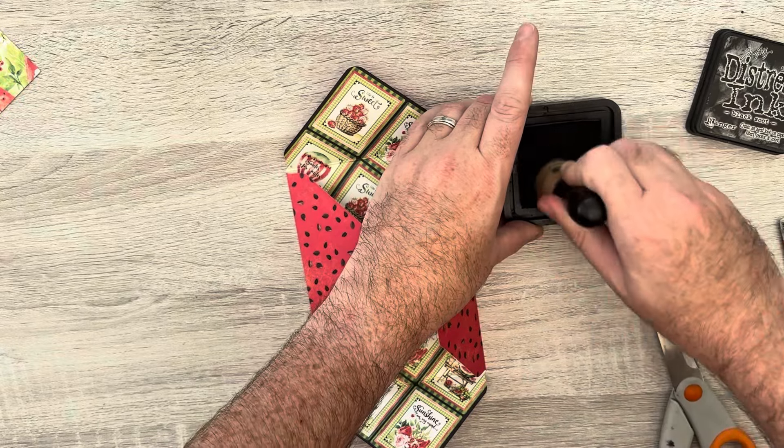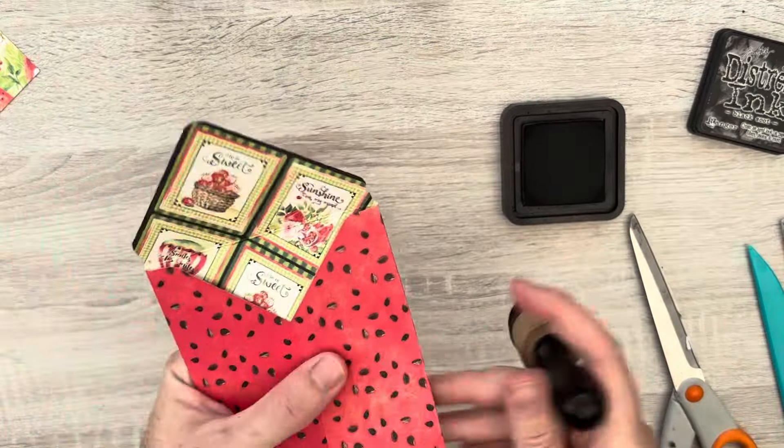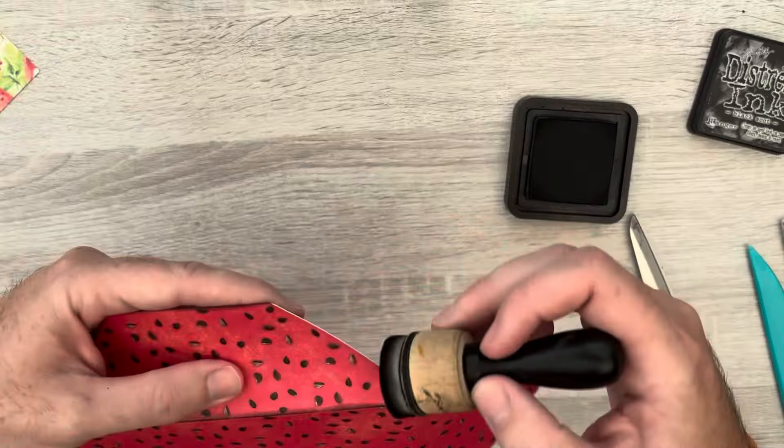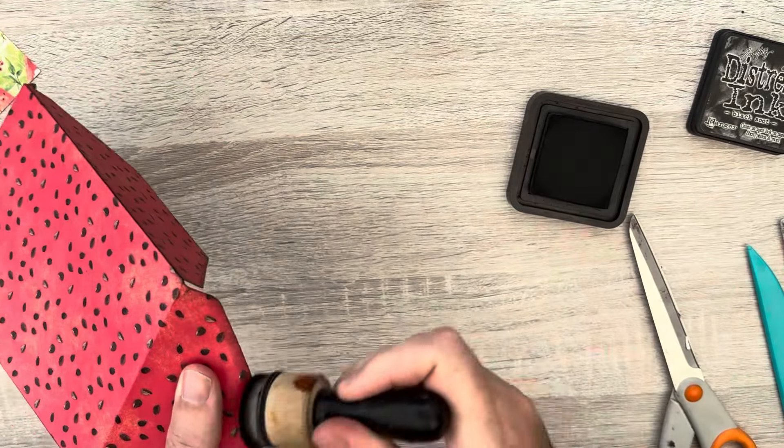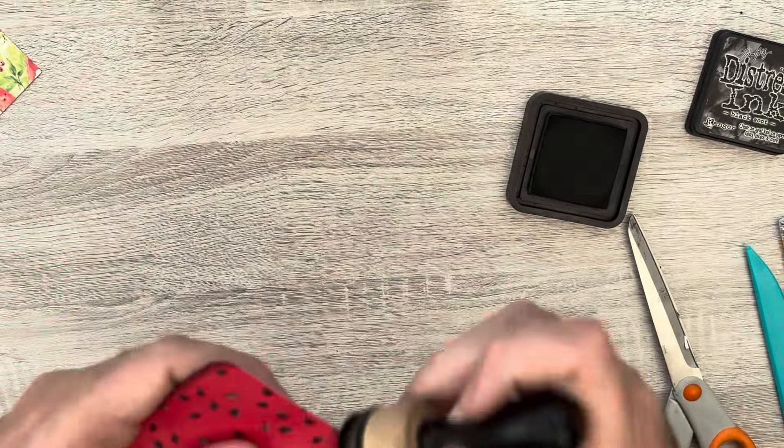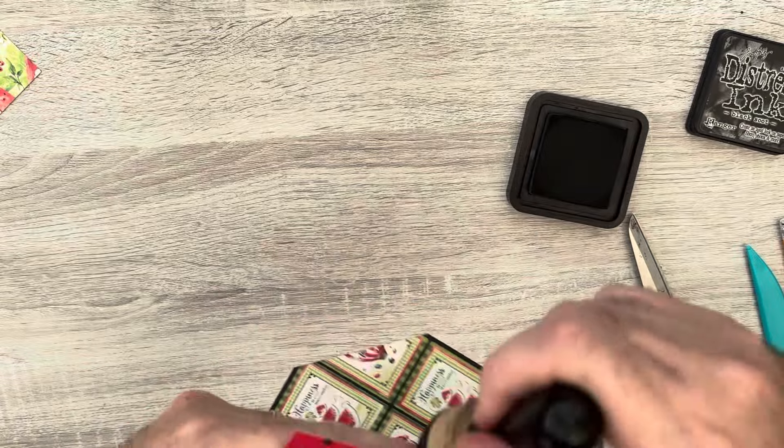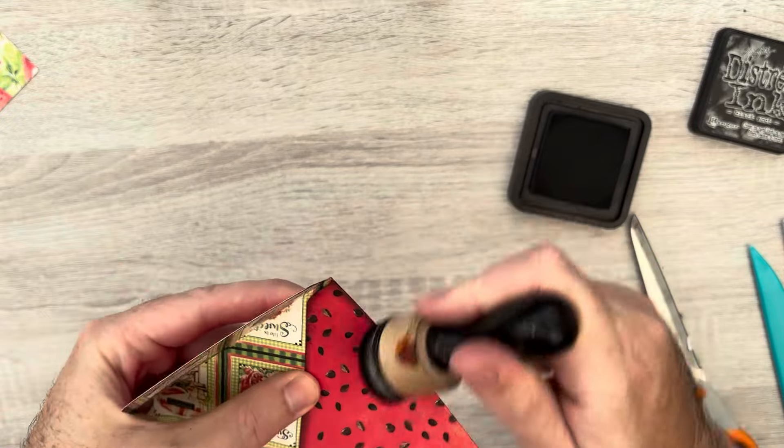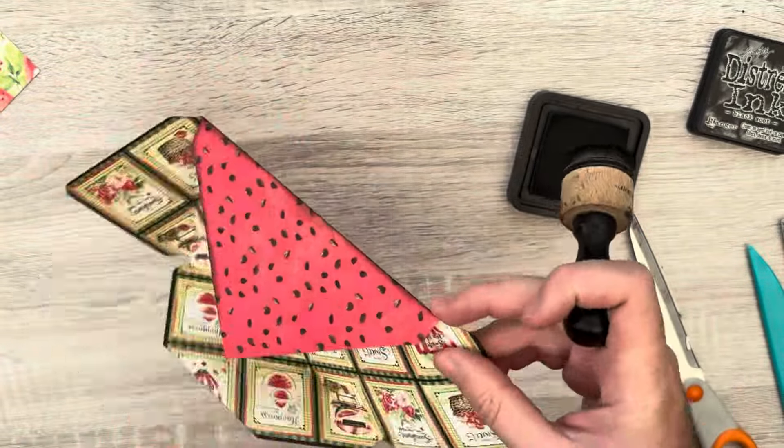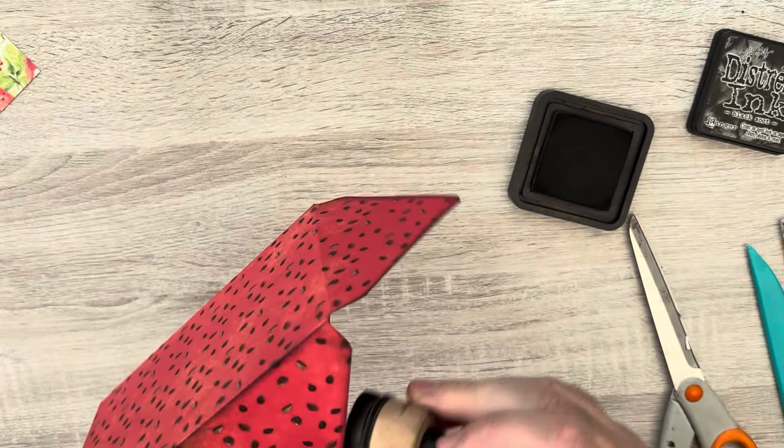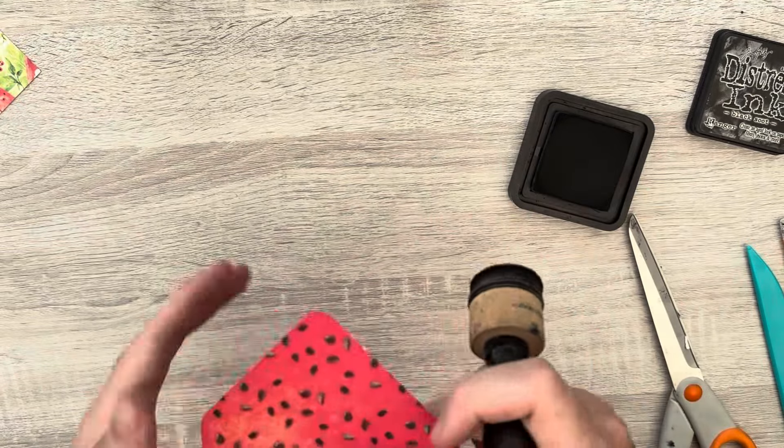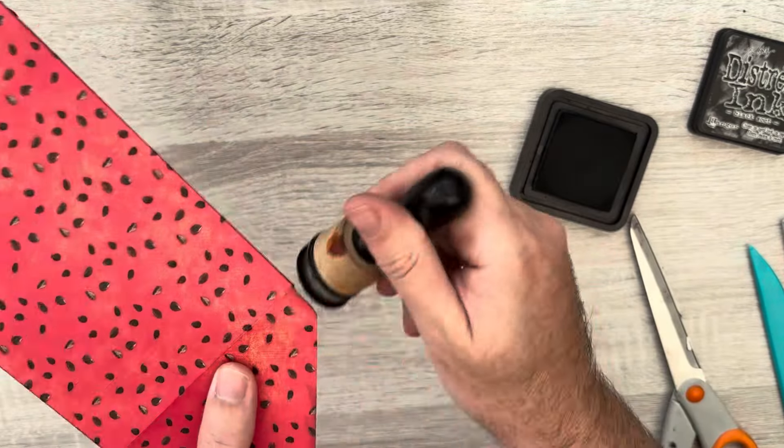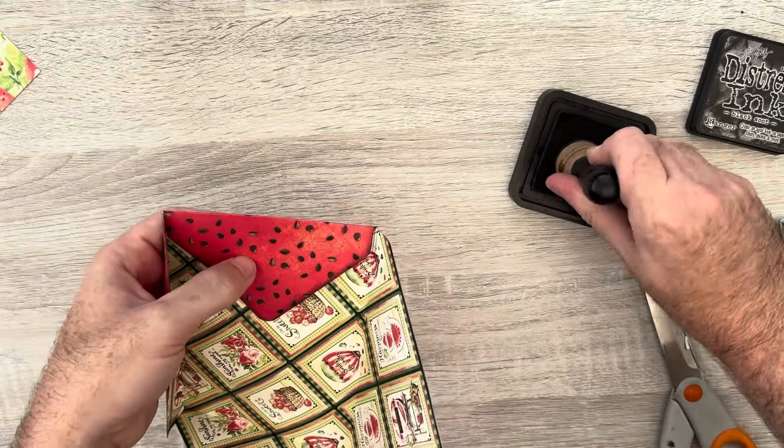And then optional extra, but I think it worked really well for highlighting the shape of your wallet is to ink the edges. So I'm just using my black soot distress ink. And I'm going around all the edges quite dark because I want the shape of it to stand out. You're going to see what I mean in a second.